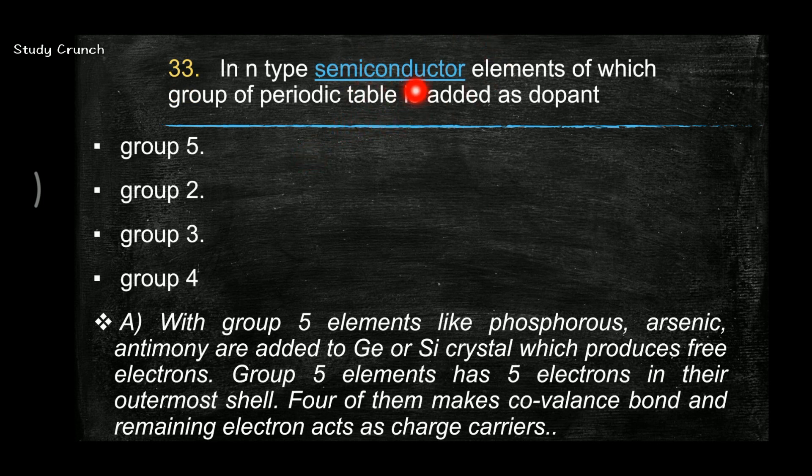In n-type semiconductor element, which of the following group of a periodic table is added as dopant? The answer is group 5 elements like phosphorus, arsenic, antimony are added to germanium or silicon crystals which produce free electrons. And group 5 element has 5 electrons in their outermost shell. Four of them make a covalent bond and the remaining act as charge carriers.